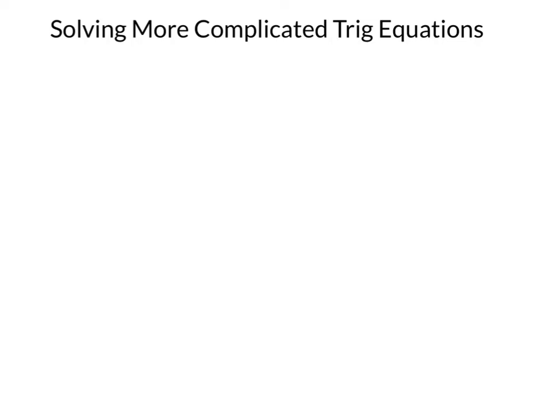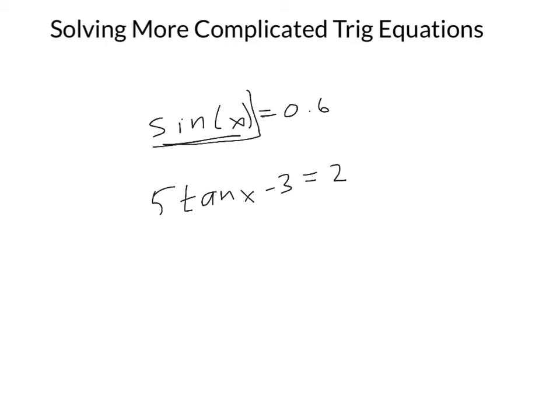In this lesson, we're going to learn some methods to solve more complicated trig equations. I'm going to assume that you already know how to solve something like 5 tangent x minus 3 equals 2 — that you're able to get things into a trig function alone equal to some value, and then solve it. Assuming you have that skill, we're ready to move on and talk about more complicated trig equations.